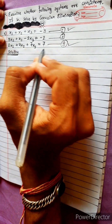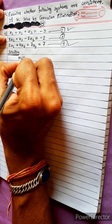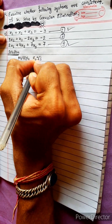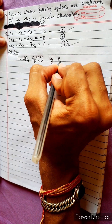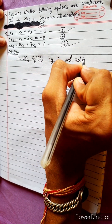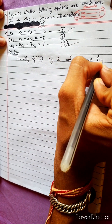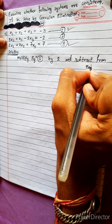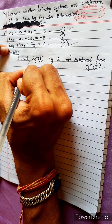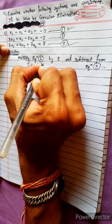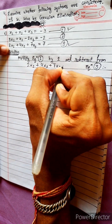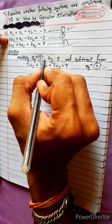Solving equations 1 and 2: let's multiply equation 1 by 2 and subtract from equation 3. We write equation 3 first: 2x1 plus 4x2 plus 7x3 equals 7.